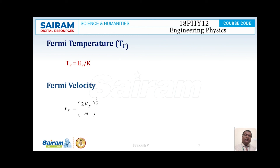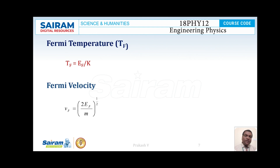Next, Fermi velocity. The velocity of the electrons which occupy the Fermi level is called Fermi velocity, denoted by symbol Vf. Fermi velocity Vf = (2EF / M)^(1/2), where M is the mass of the electron and EF is the Fermi energy.